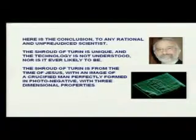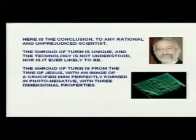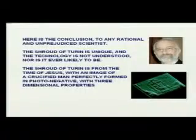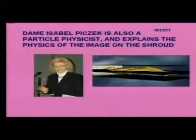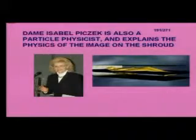In conclusion, for any rational and unprejudiced scientist: the Shroud of Turin is unique and the technology behind it is not understood, nor is it ever likely to be. The Shroud is from the time of Jesus with an image of a crucified man perfectly formed in photo-negative with three-dimensional properties. Dame Isabel Picksek, a particle physicist, explains that at the formation of the image on the Shroud there was an event horizon — the body of Jesus was suspended in space with zero gravity, no entropy, no gravitational collapse, no time, and no space. She says this conforms to no known laws of physics and is a true event horizon.